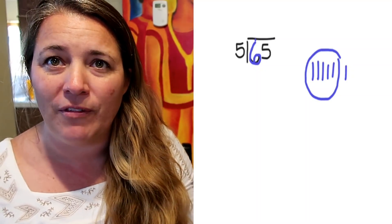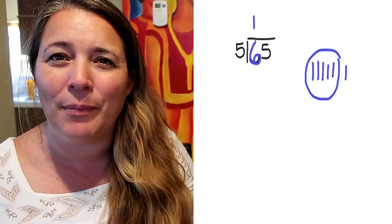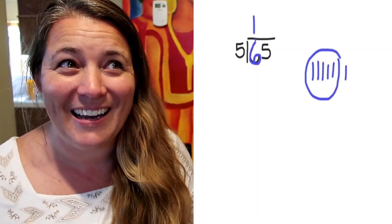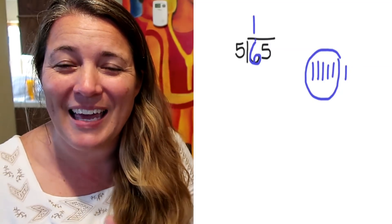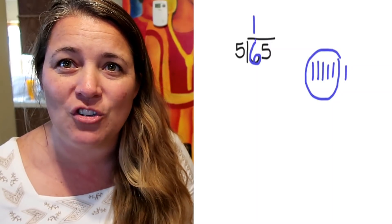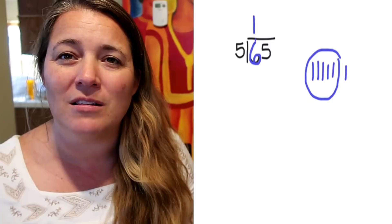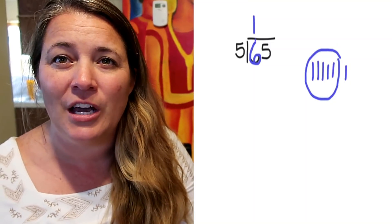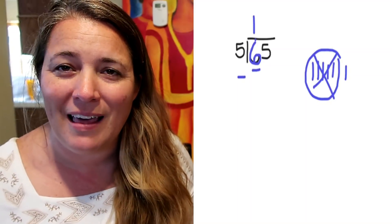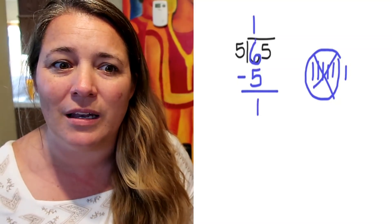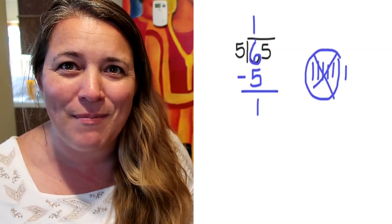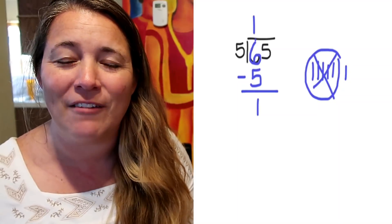We're going to take that one group and write it above the 6. Now you're dividing! We're going to take that group away because division is subtracting out the pieces to find our final answer. So we subtract: 6 minus 5 is 1. In my picture I have one stick left, and in my math problem I have one left — it's a match.